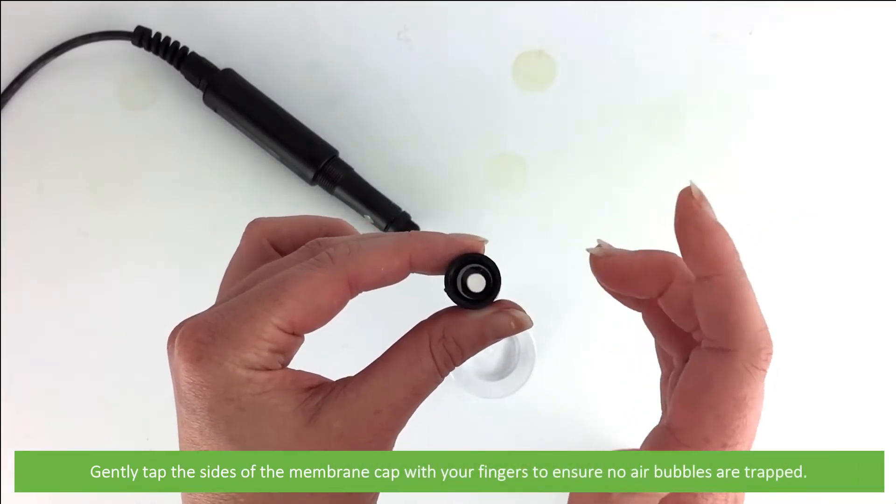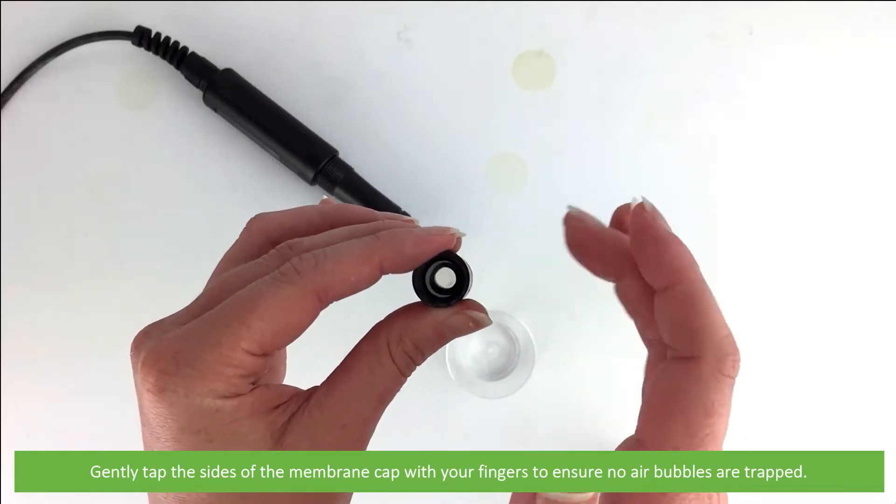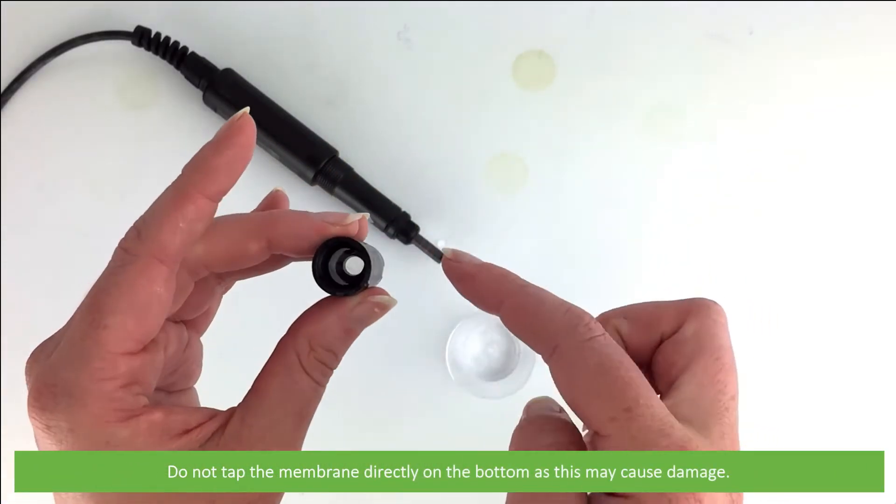Gently tap the sides of the membrane cap with your fingers to ensure no air bubbles are trapped. Do not tap the membrane directly on the bottom as this may cause damage.